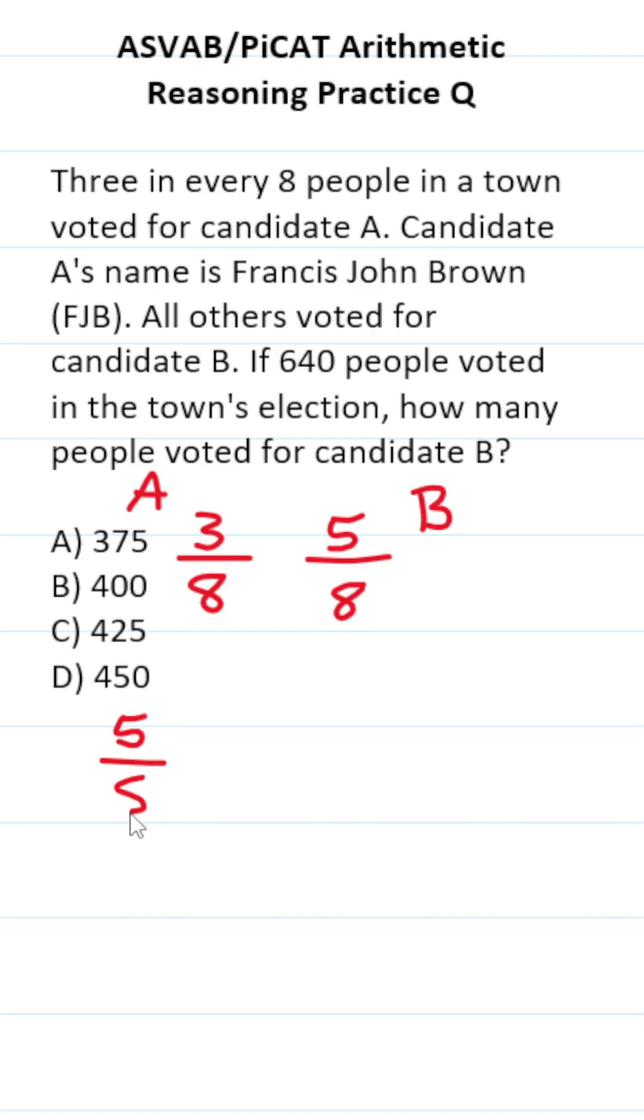To figure out how many people voted for candidate B in total, we're going to do five eighths times 640.